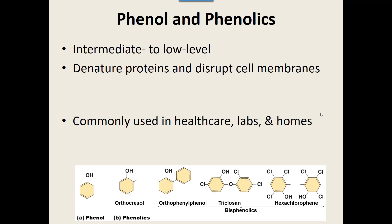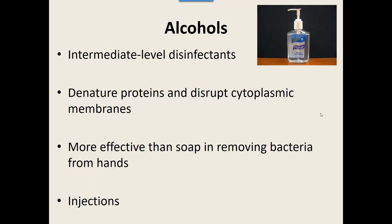Alcohols are intermediate-level disinfectants that start killing some pathogenic organisms. They work by denaturing proteins and disrupting the cytoplasmic membrane, and are more effective than soap at removing bacteria from hands. Soap breaks bacteria off your hands so they get washed off, while alcohols kill bacteria. This is the main reason we use an alcohol wipe before swabbing skin prior to an injection — to kill bacteria at the site before opening a wound.